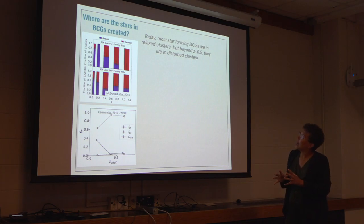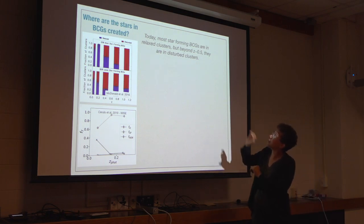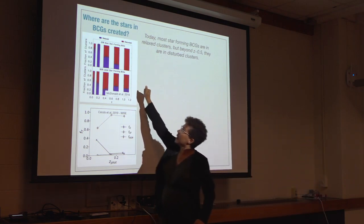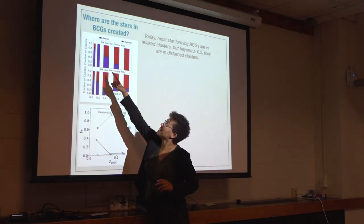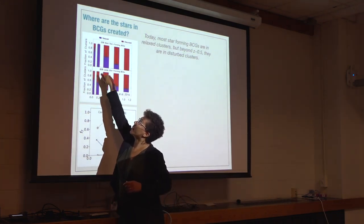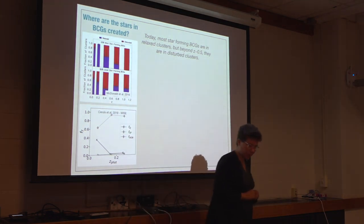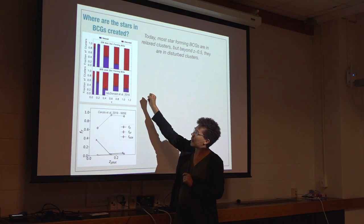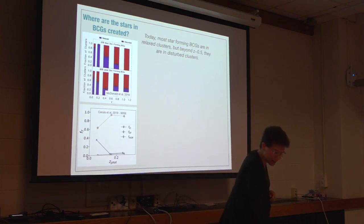That's the exact opposite as in the redshift greater than 0.5 universe. In the higher-z universe, it is the unrelaxed clusters that are forming most of their stars. The disturbed clusters are in red and the relaxed clusters are in blue. Locally, most star-forming BCGs are in relaxed clusters, and that is the opposite at higher redshift. Michael McDonald has done this using SZ measurements, and Crullo has recently done this using WISE infrared.